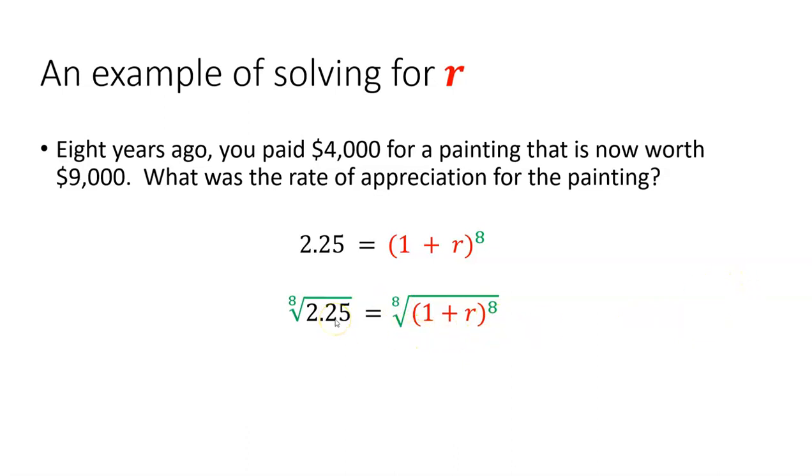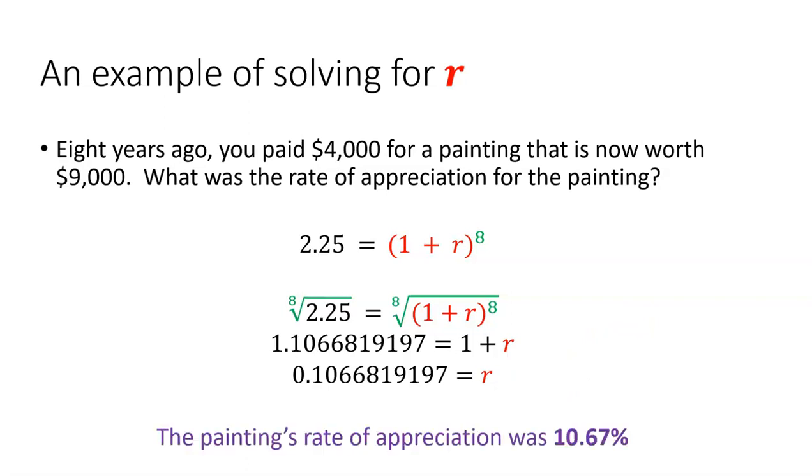We'll use a calculator to find the eighth root of 2.25. We've practiced that before. I wrote down a lot of decimals just to be safe. And then to get r all by itself, we need to subtract 1 from both sides. And we have this decimal equals r. And r is positive, so we don't need to worry about dividing by a negative on both sides. We do need to move the decimal two spots to change this into a percent. And we'll round it to two decimal places. So the painting's rate of appreciation was about 10.67%. That's an annual rate of appreciation.